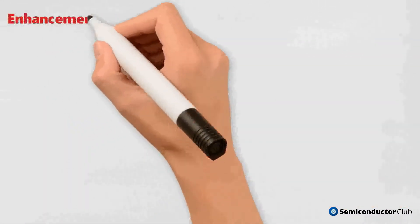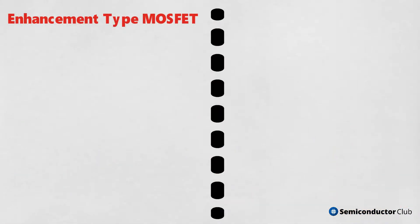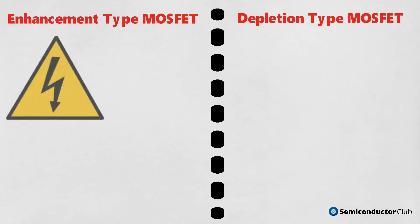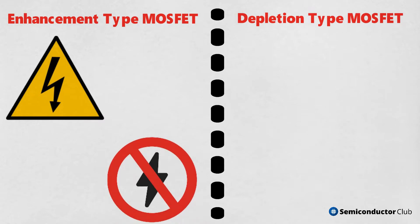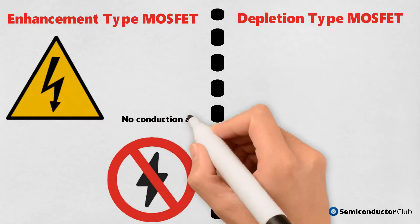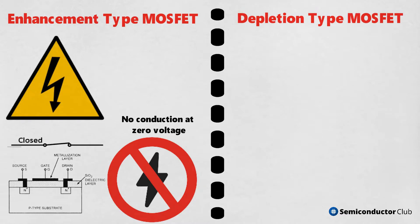Enhancement type MOSFET. In enhancement type MOSFET, there is no conduction at zero voltage, which implies it is closed or off by default as there is no existing channel. When the gate voltage is increased more than the source voltage, the charge carriers — holes — shift away leaving behind the electrons.